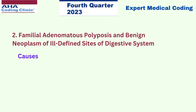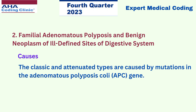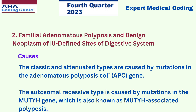Let us see the causes. The classic and attenuated types are caused by mutations in the adenomatous polyposis coli gene. The autosomal recessive type is caused by mutations in the MUTYH gene, which is also known as MUTYH-associated polyposis.